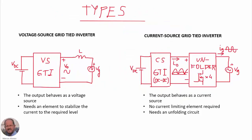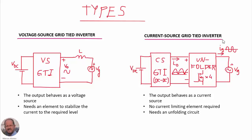There are two main types of grid-type inverters. One is the voltage source grid-type inverter, in which the output of the inverter behaves as a voltage source. Because the grid also behaves as a voltage source, we need some kind of element in order to limit the current between them. Usually, an inductor is employed for this purpose.